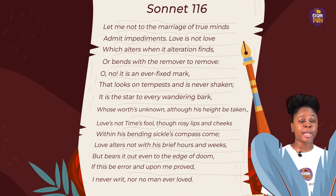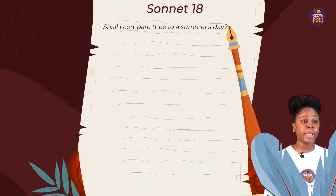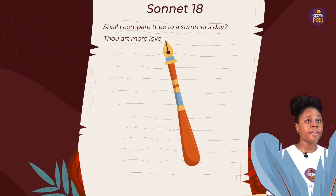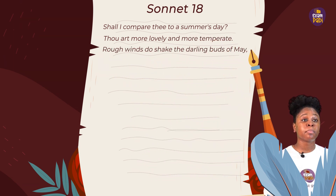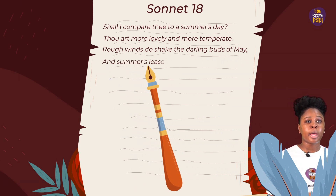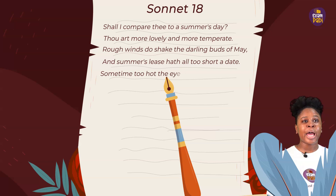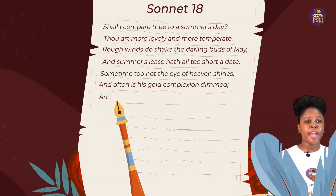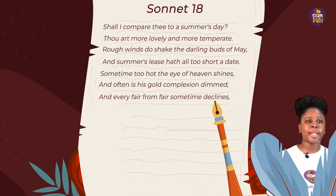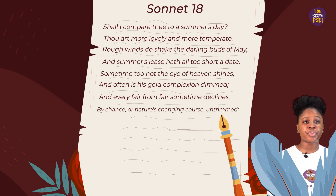The next poem we're going to look at is Shakespearean Sonnet 18. "Shall I compare thee to a summer's day? Thou art more lovely and more temperate. Rough winds do shake the darling buds of May, and summer's lease hath all too short a date. Sometimes too hot the eye of heaven shines, and often is his gold complexion dimmed. And every fair from fair sometimes declines, by chance or nature's changing course untrimmed."